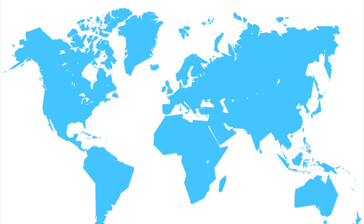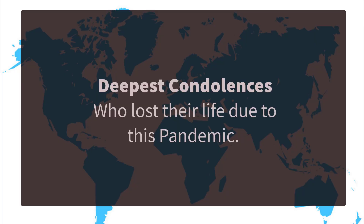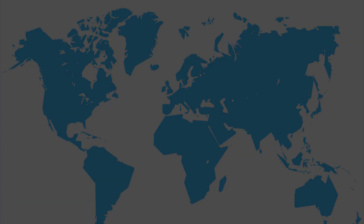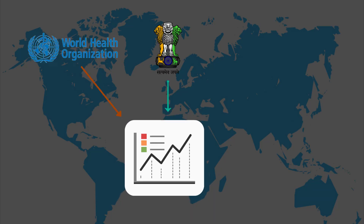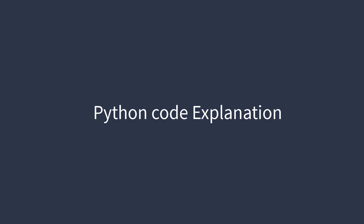Particularly for this video, I would not say that I am excited to share this code, but definitely I can say that with the help of this code you can get information about the various stats of coronavirus from various authentic sources such as WHO, the Indian government, Johns Hopkins, and Worldometer. So let's get started and jump into the code directly.